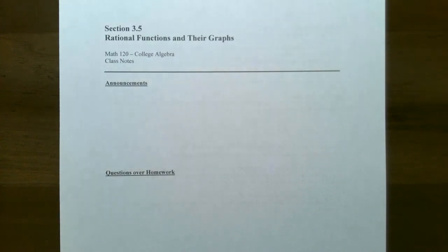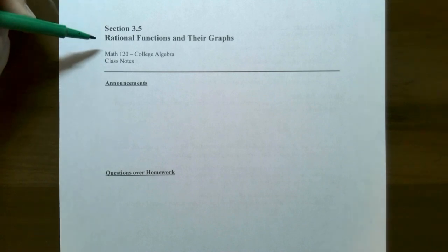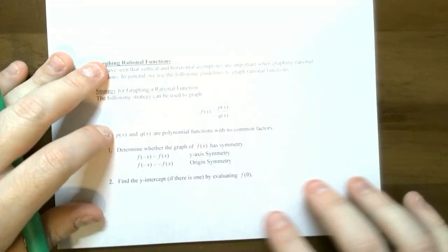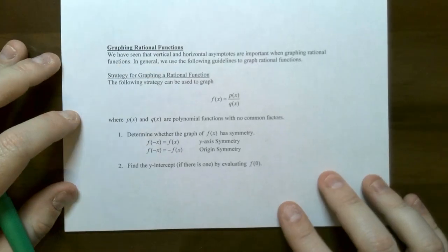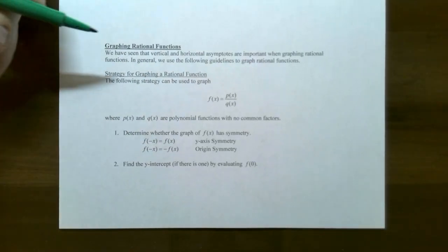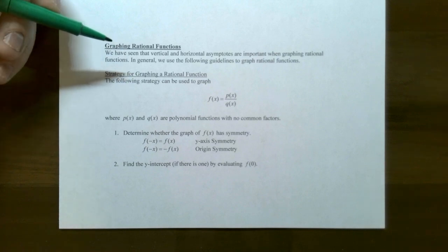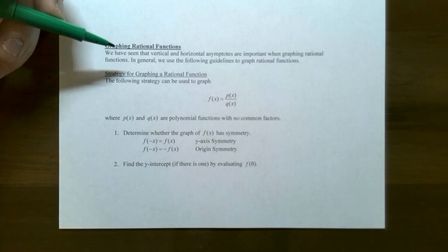Hi everyone, it's Professor Pemberton. In this second part of the video we're going to look at how to graph rational functions. We've seen how to find the vertical and horizontal asymptotes from the previous video. We've also looked at how to find important features about what's happening near a vertical asymptote.